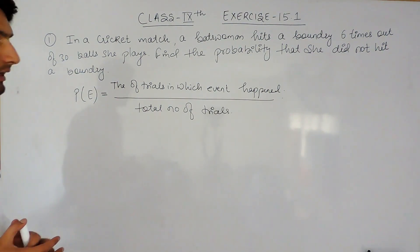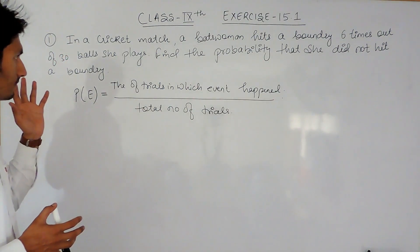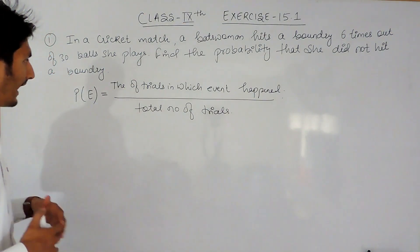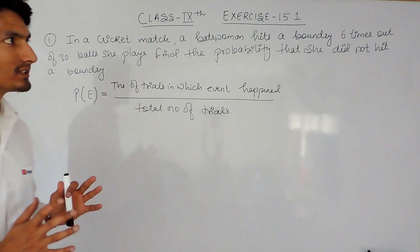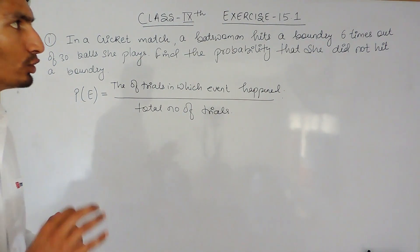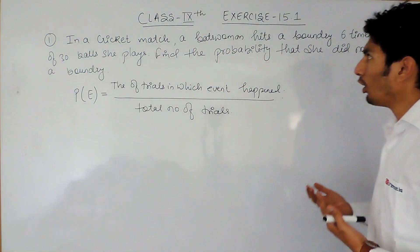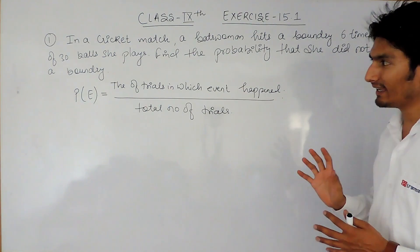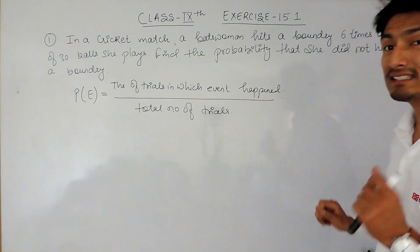In this question, whenever 30 balls are bowled, the total number of tries is 30, because we are bowling 30 balls. So these are the total number of tries. Whenever 30 balls are played, the batswoman hits six times, so if we want to find the probability of her hitting a boundary, this event has happened six times.